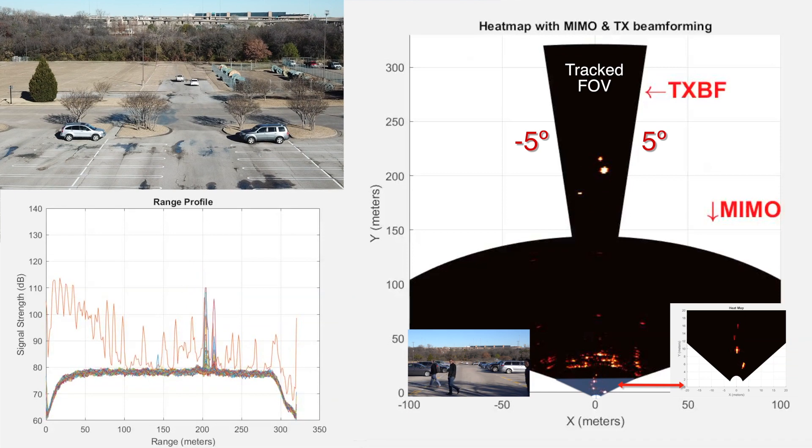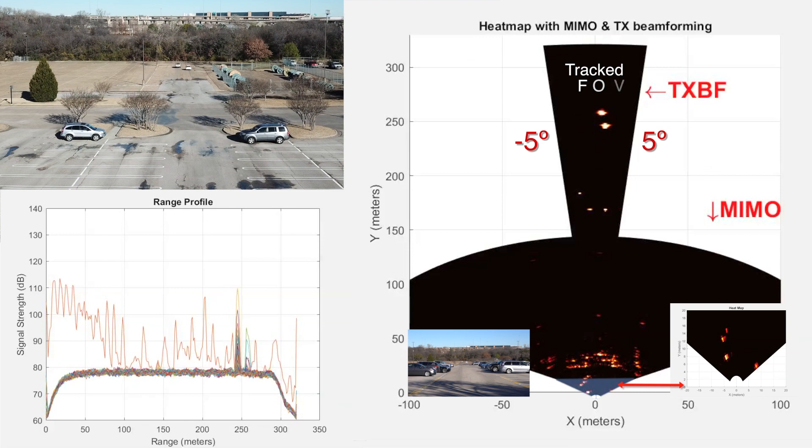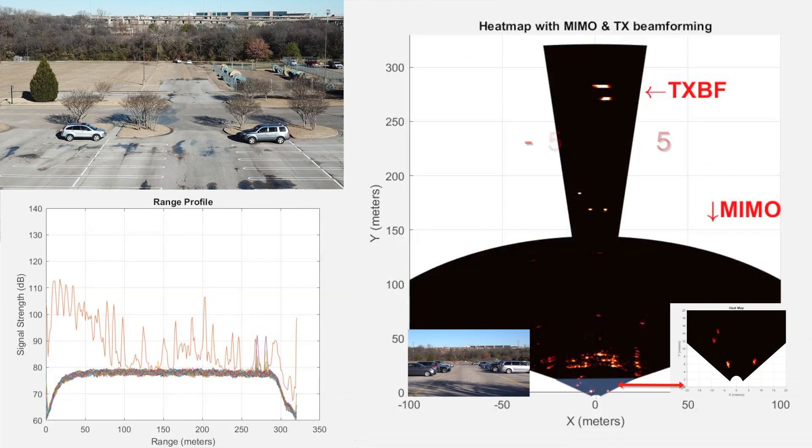A drone is flying above the parking lot to keep track of the car driving in the far range. Both angle and range information is available as shown in the range azimuth heatmap.